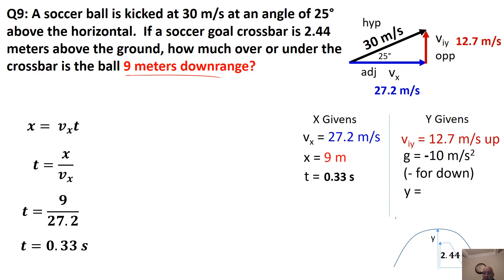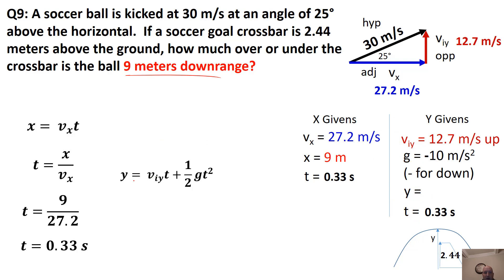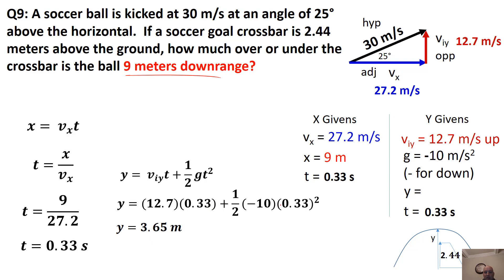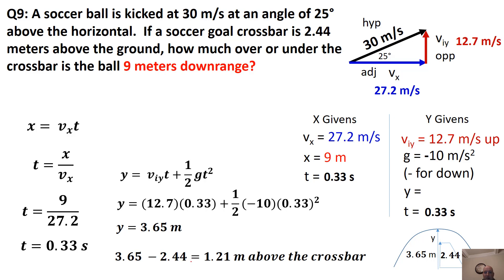At 0.33 seconds we've traveled 9 meters. Now we use that time in the Y-axis. Using y = VIY × t + ½g × t²: y = 12.7 × 0.33 + ½ × (−10) × (0.33)² = 4.19 − 0.54 = 3.65 meters above the ground. The crossbar is 2.44 meters high, so we subtract: 3.65 − 2.44 = 1.21 meters above the crossbar.